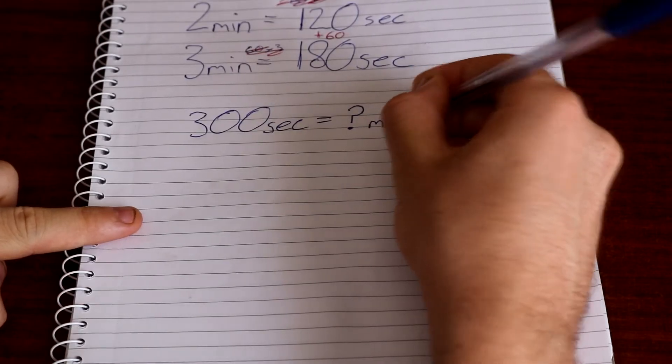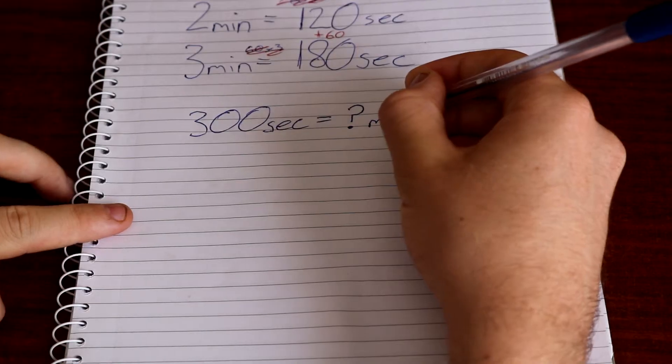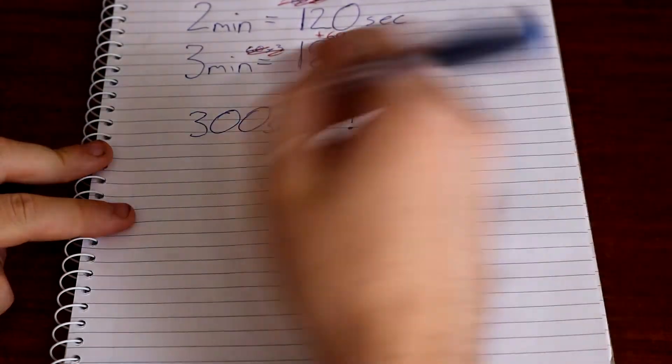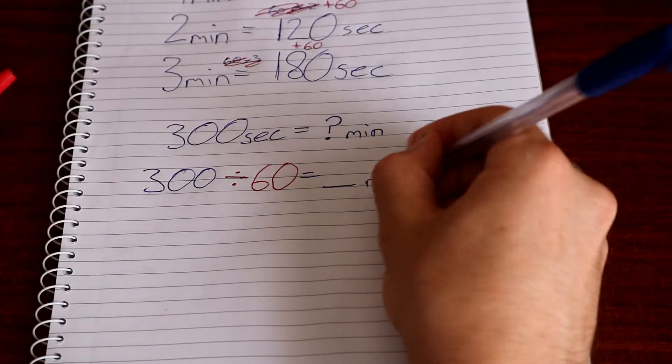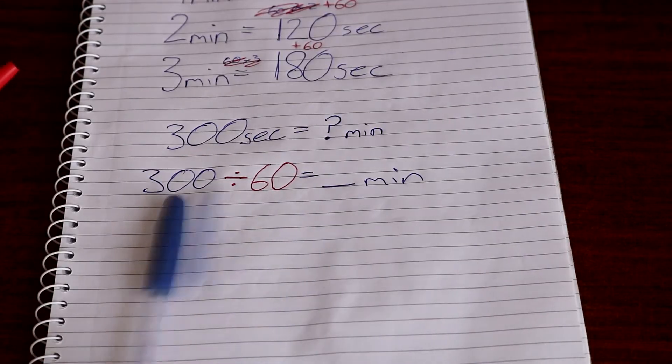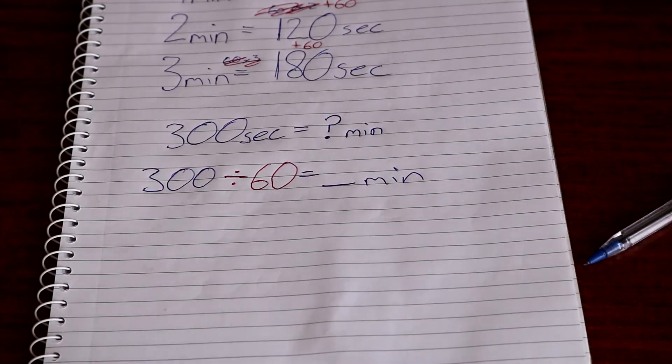For this equation I have 300 seconds and we are trying to find out how many minutes that is. What you need to do is divide the number of seconds by 60 to convert the seconds to minutes.